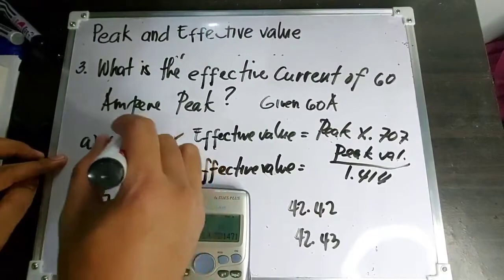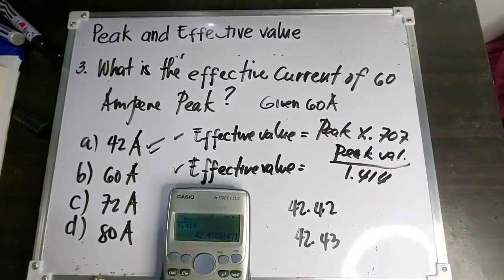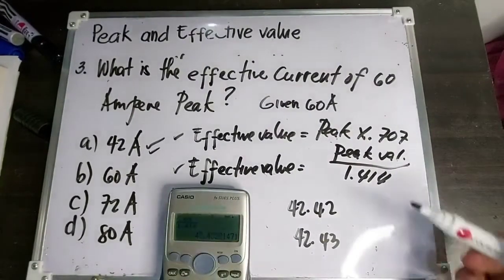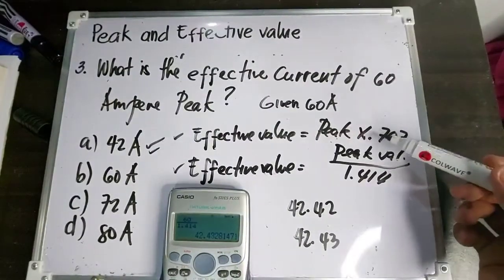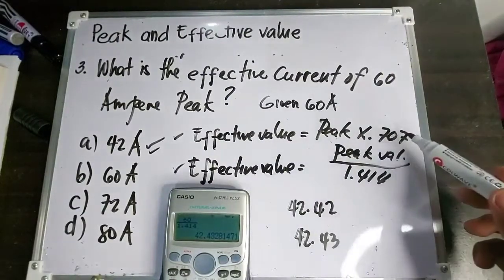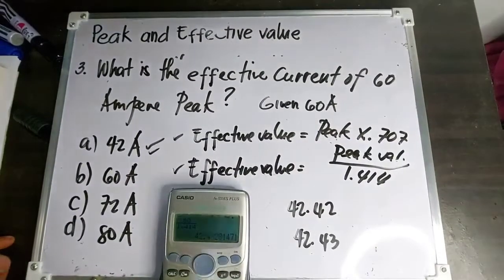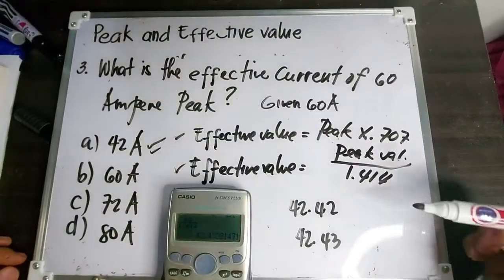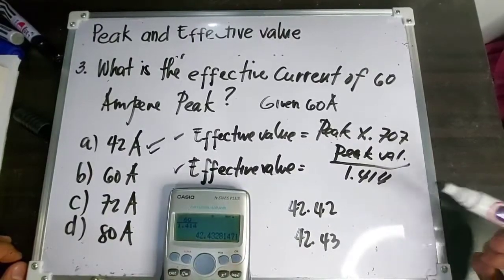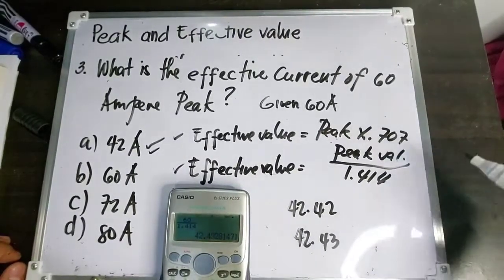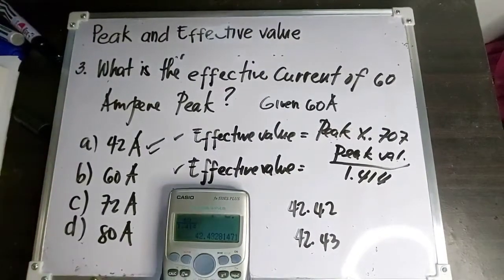Pareho lang sila. Pwede ninyong gamitin ang dalawang formula na yan sa pagkuha ng effective value. Kahit sa peak value, pwede ring gamitin: peak value is equal to effective value divided by 0.707. Basta marunong ka lang din na mag-derive ng formula base dun sa binigay na formula. Kasi hindi naman kailangan nating memorihin lahat ng formula — kailangan marunong din tayong mag-derive. Yan yung last problem ng peak and effective value.